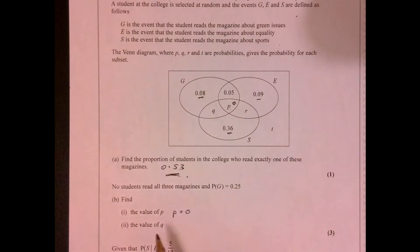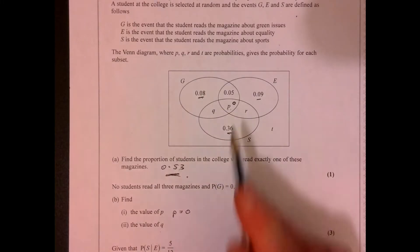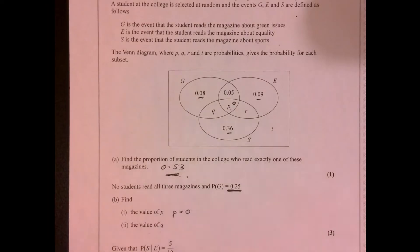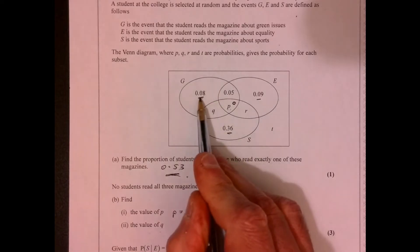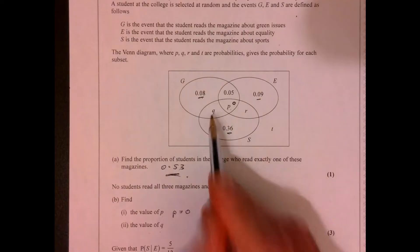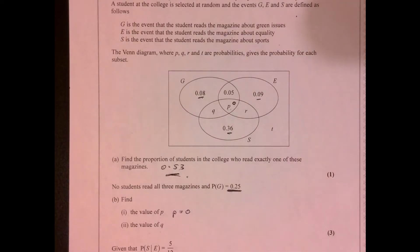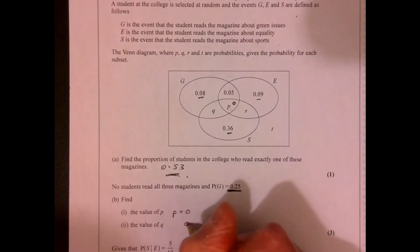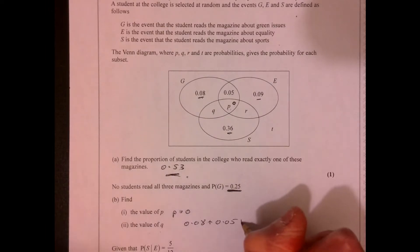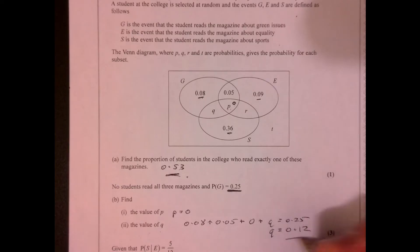And then the next part, we need to work out the value of Q. Well, it did tell me this up here. So I know that this, this, this, this equals 0.25. So we can write 0.08 plus 0.05 plus 0 plus q equals 0.25. So therefore, q must equal 0.12. Here we go.